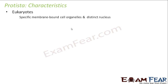First of all, they include eukaryotes. For prokaryotes, we have dedicated one kingdom, that was Monera. Now is the turn for eukaryotes. Eukaryotes are those who have specific membrane-bound cell organelles and a distinct nucleus. If you look at the cell, everything will be well distinct with proper cell membranes for each cell organelle, be it a Golgi apparatus, endoplasmic reticulum, or a nucleus.